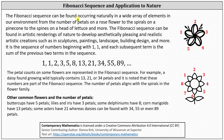The Fibonacci sequence can be found occurring naturally in a wide array of elements in our environment, from the number of petals on a rose flower, to the spirals on a pine cone, to the spines on a head of lettuce and more. The Fibonacci sequence can also be found in artistic renderings of nature to develop aesthetically pleasing and realistic creations, such as in sculptures, paintings, landscape, building design, and more.